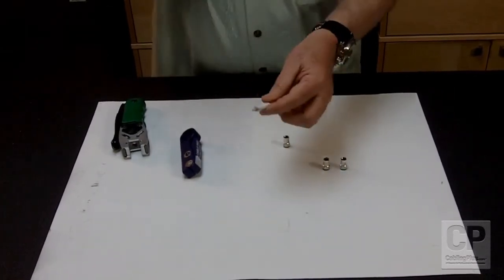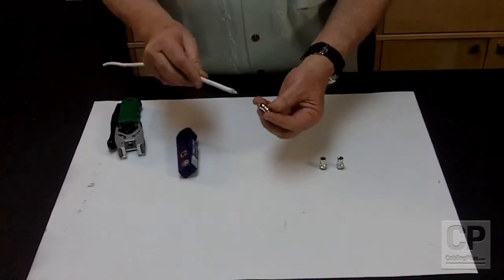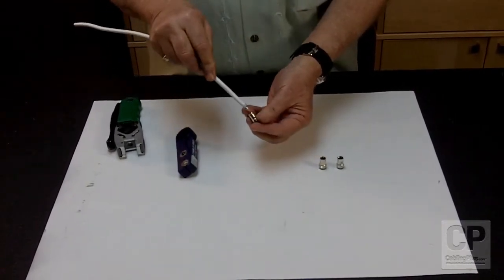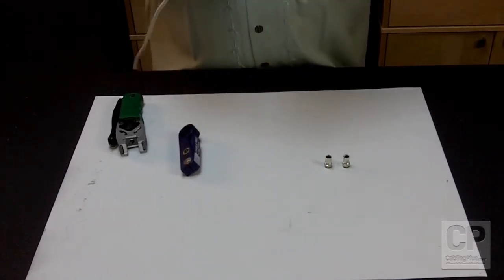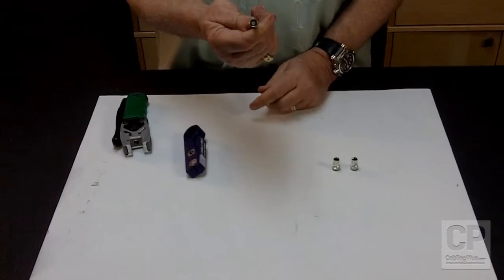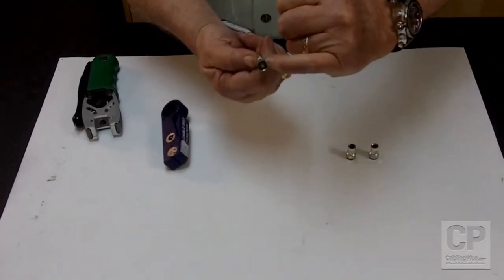Once that is done, what you want to do is grab the connector and install the center pin right into the back end and then push the cable until the center pin is exposed. And you can see that it butts up against the white dielectric.